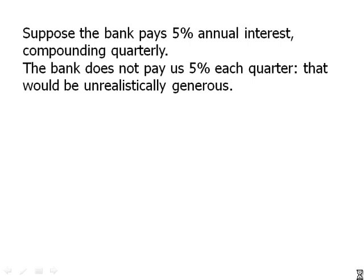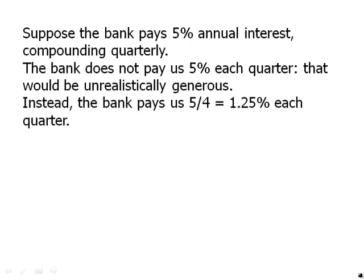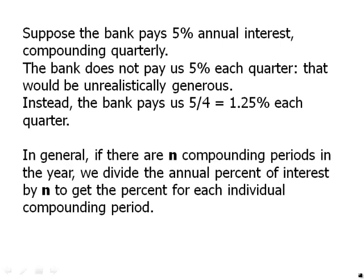Instead, the bank pays us 5% divided by 4, which is 1.25% — that's the percent each quarter. In general, if there are N compounding periods in the year, we divide the annual percentage interest by N to get the percent for each individual compounding period. We divide by 4 for quarterly compounding and by 12 for monthly compounding.